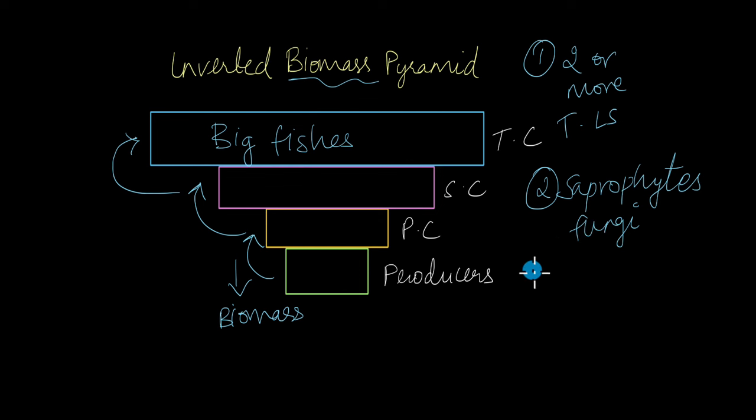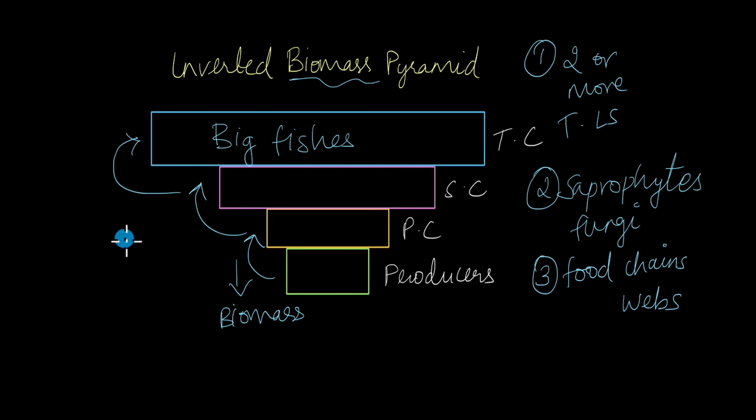Another thing is that these pyramids are based on food chains and not food webs. There rarely exist simple food chains in the ecosystem; it is always food webs because it's a very complex interaction that occurs between different trophic levels. But these ecological pyramids are based on simple food chains and not food webs, which is another shortcoming of such pyramids. With this, we're finally done talking about the different types of ecological pyramids.